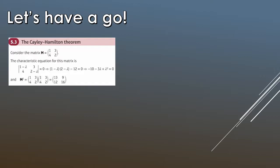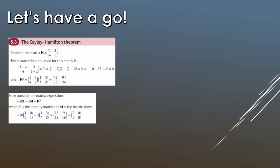With M squared and the characteristic equation in hand, we now apply the Cayley-Hamilton theorem. Our characteristic equation is lambda squared minus 3 lambda minus 10. We replace every lambda with the matrix M: lambda squared becomes M squared, minus 3 lambda becomes minus 3M, and the constant minus 10 becomes minus 10 times the identity matrix I. Since we're working with 2x2 matrices, I is the 2x2 identity.